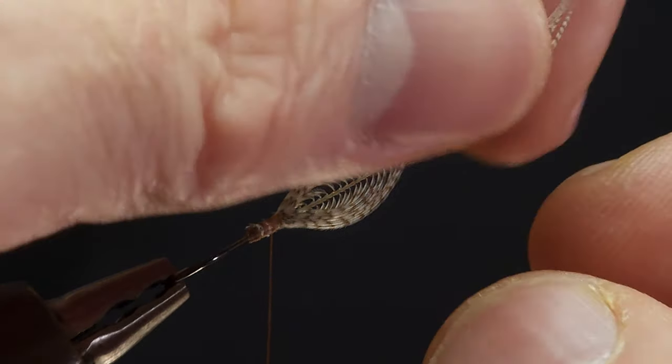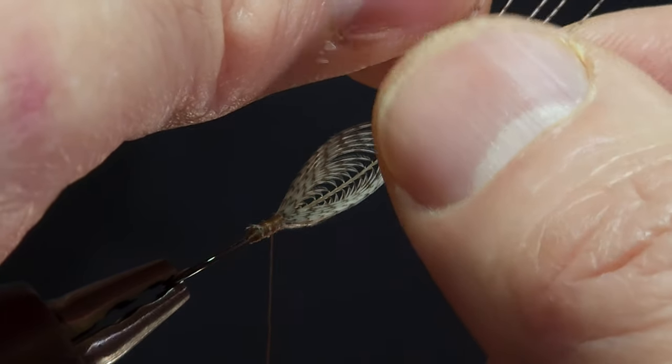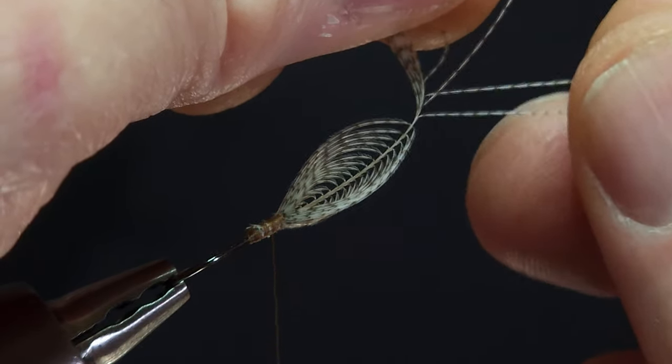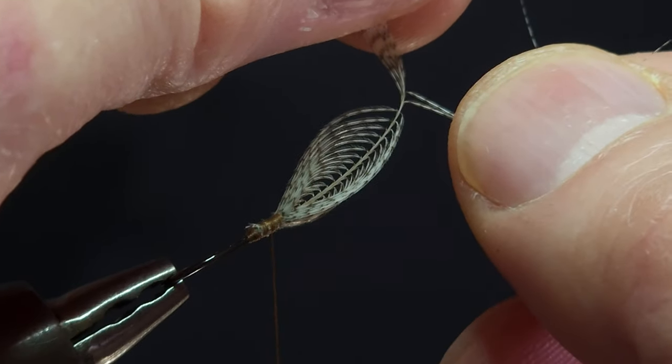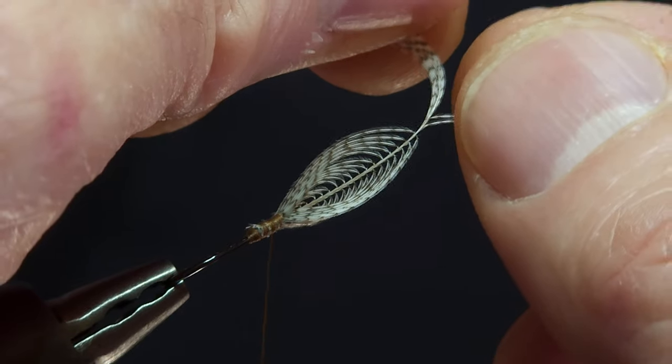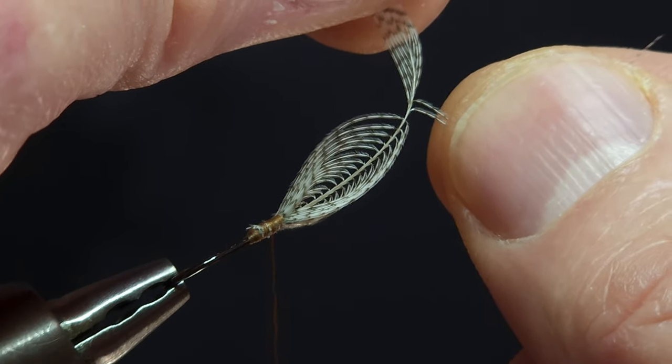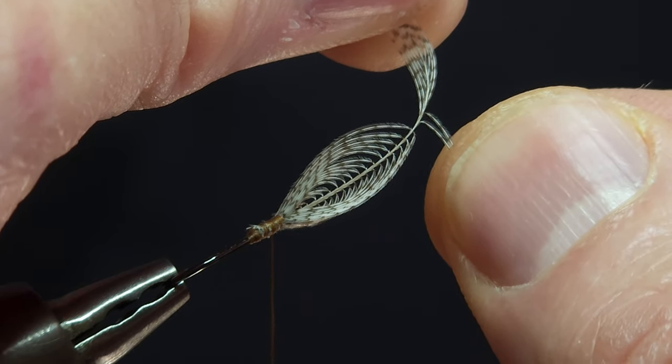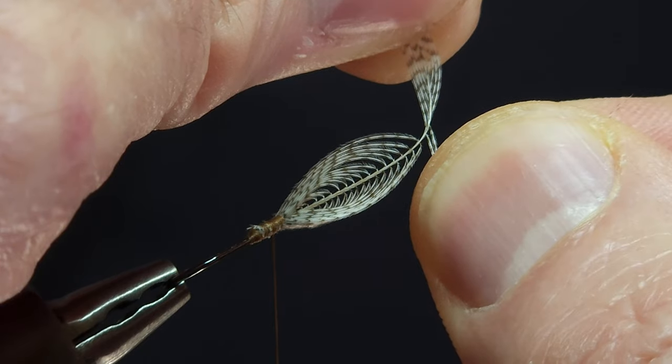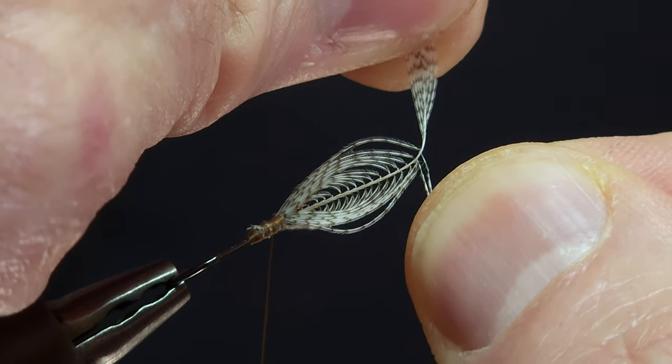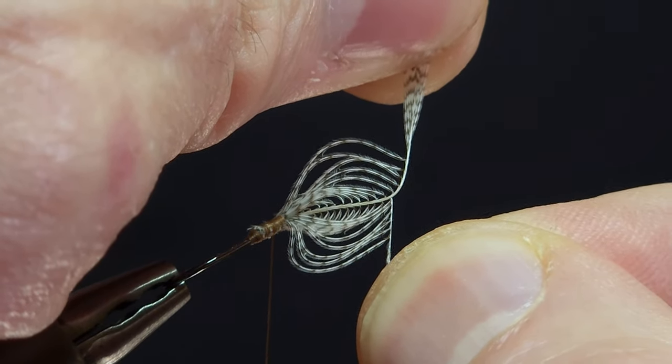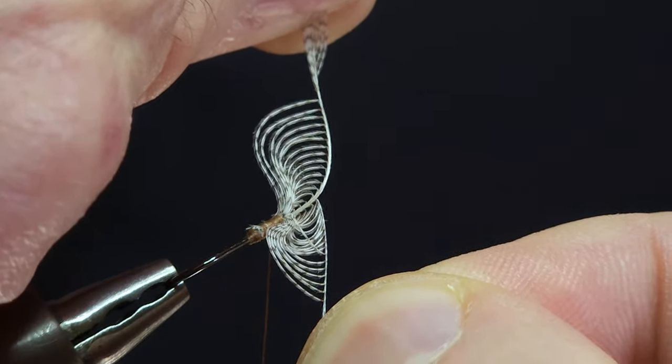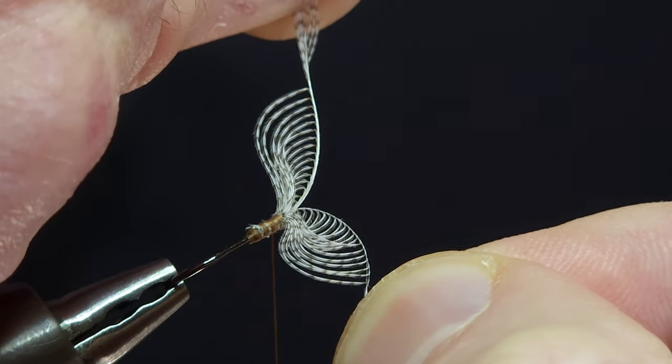We're going to start by isolating the two bottom feather barbs on the tip section of the wing. I'm going to grab those two between the thumb and index finger of my dominant hand, my right hand. Then I'm also going to grab the remaining section of feather tip between the thumb and index finger of my left hand. And then with my right hand, I'm gently going to pull on those two barbels such that it peels away from the stem and taking the barbs from the base of the feather with it down to the base where it meets the hook shank.